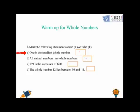599 is a successor of 600. The statement is false because it's not a successor, it's a predecessor.